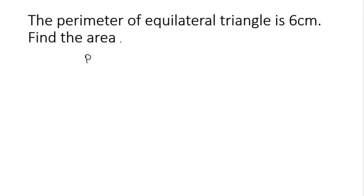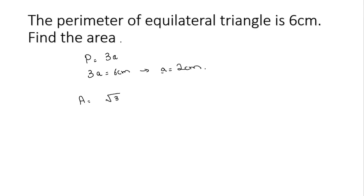An equilateral triangle has all three sides equal, so its perimeter is equal to 3a. So 3a equals 6 cm, which implies that a equals 2 cm — that is the length of each side. Now we are going to find the area of the equilateral triangle. There is a formula: area equals root 3 divided by 4, multiplied by the side length squared.